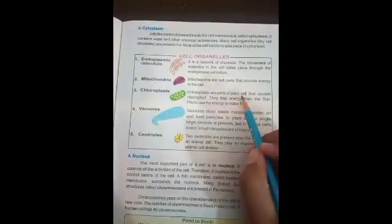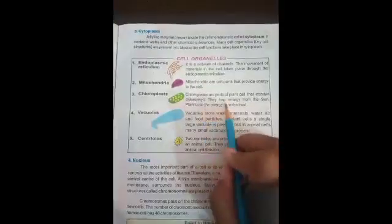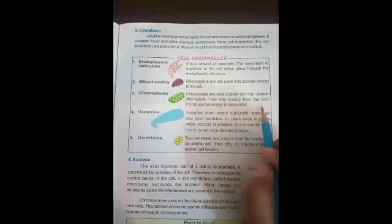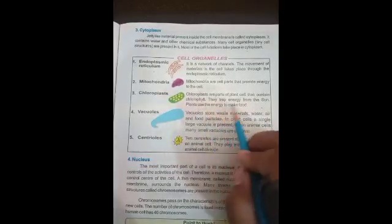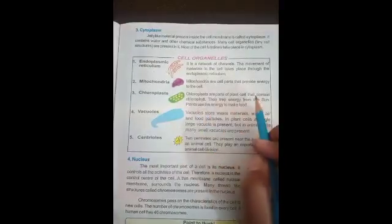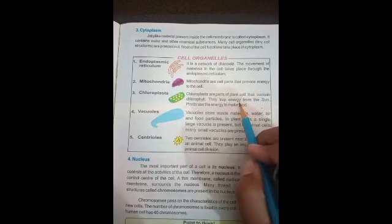Chloroplasts are parts of plant cells that contain chlorophyll. They trap energy from the sun, and the plants use that energy to make food. This process is called photosynthesis.